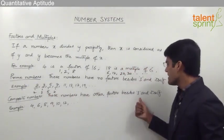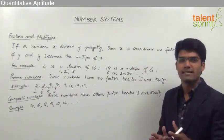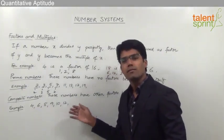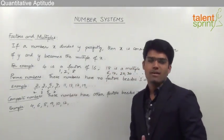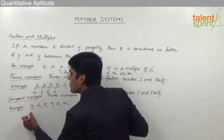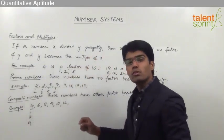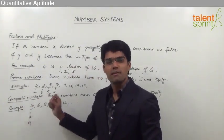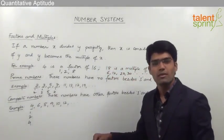Composite numbers are numbers that have other factors besides 1 and itself — that is, numbers which have more than 2 factors. For example, 4, 6, 8, 9, 10, 12 and so on. All numbers other than prime numbers can be taken as composite numbers. For example, the factors of 4 are 1, 2 and 4. Since 2 can also divide 4 exactly, there are more than 2 factors, so 4 cannot be a prime number — it is called a composite number.